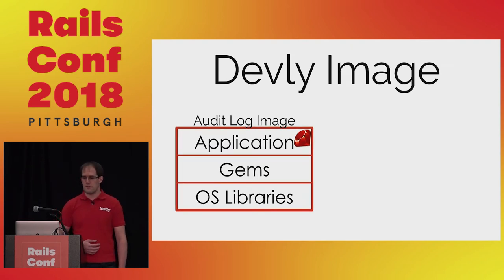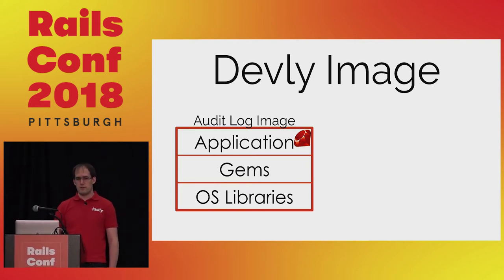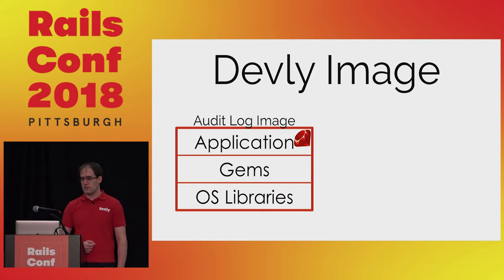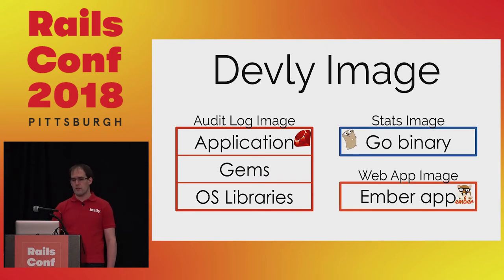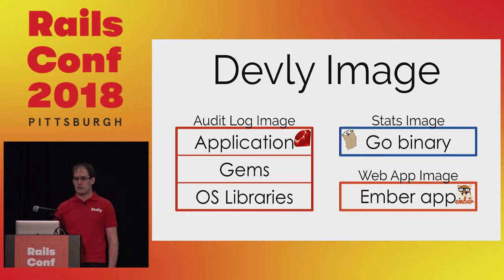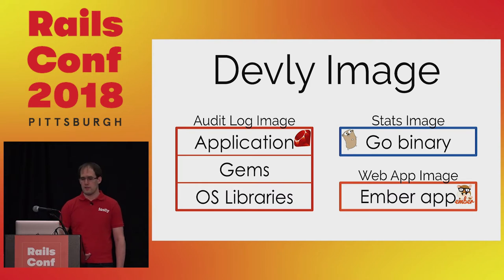An image contains the files necessary to run a service. The audit log image uses Ruby, so it has a copy of our application code. This code requires libraries like Rails, Sidekiq, and a JSON parser, so the image contains those installed gems. The JSON parser requires a C library, so we install that along with an OS package system. In our repository there is a Dockerfile that contains the instructions for building this image. Images can contain applications for any language — our Stats service is written in Go, and the web app our customers use is written in Ember. We share all these images across teams by uploading and downloading them from the Google Container Registry.